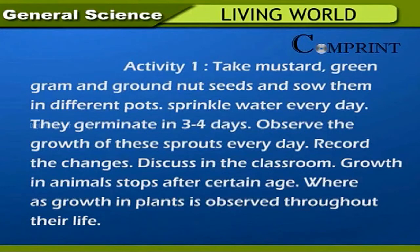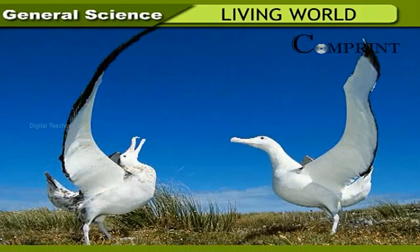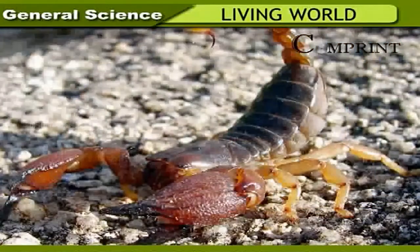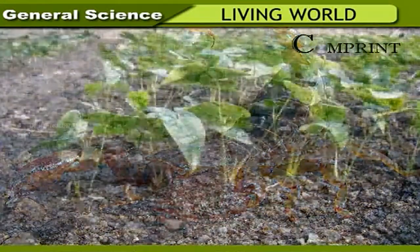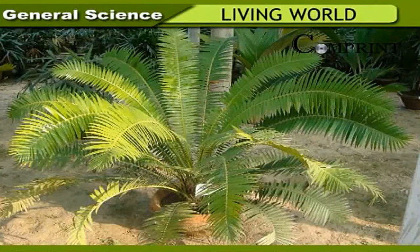Growth in animals stops after a certain age, whereas growth in plants is observed throughout their life. Locomotion is also a characteristic of living organisms. Animals like cows, goats, insects, fish, and birds move from one place to another for food, to protect themselves from attack, and for shelter. Animals possess different organs for locomotion called locomotory organs. Plants, however, do not move — they remain fixed firmly in the soil throughout their life.